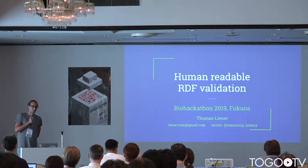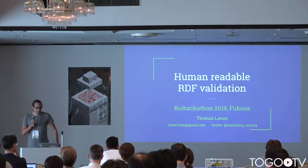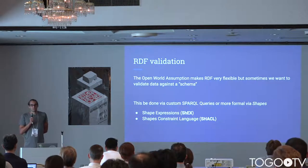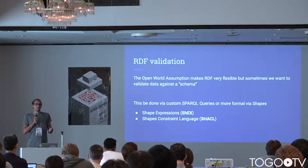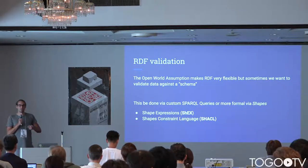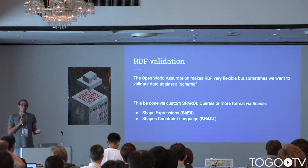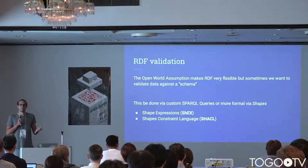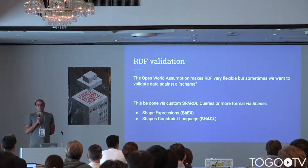But my main project or proposal for this hackathon is human readable RDF validation. So why are we talking about RDF validation? The main point of RDF is that it's very flexible — it's the open world assumption — so that makes it easy to integrate new data; you can put everything in there. However, as it turned out, it is useful to sometimes validate data against a certain schema. And you can do that with custom SPARQL queries, but the more formal approach is via shapes.